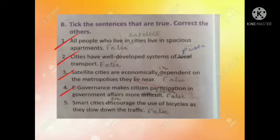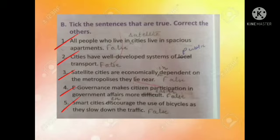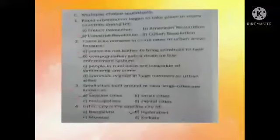Fifth one: smart cities discourage the use of bicycles as they slow down the traffic. The corrected sentence is: smart cities encourage the use of bicycles as they slow down the traffic. Now, students, multiple choice questions.